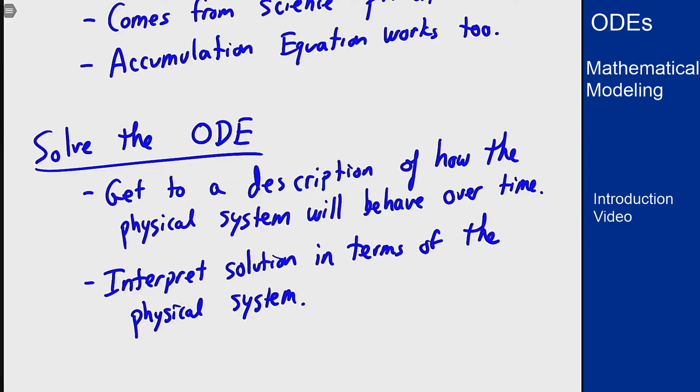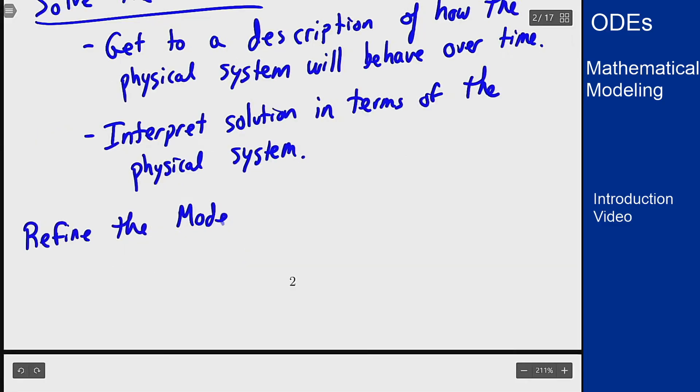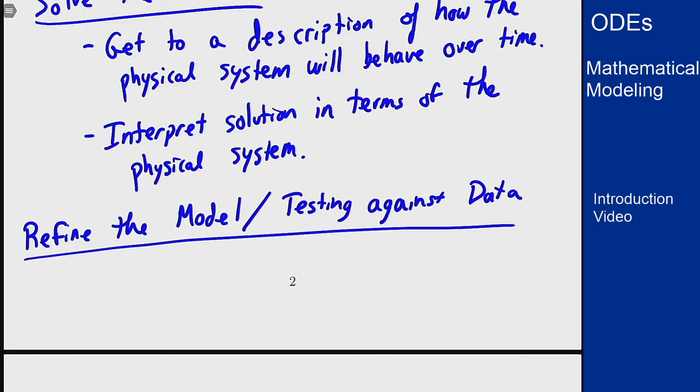A final component of this modeling process is refining the model or more directly testing the model against physical data. The point is you've written this differential equation to say what's going on in this physical system, you can solve the differential equation, and you can run the system, and then you want to compare the two to make sure they line up in a nice way.